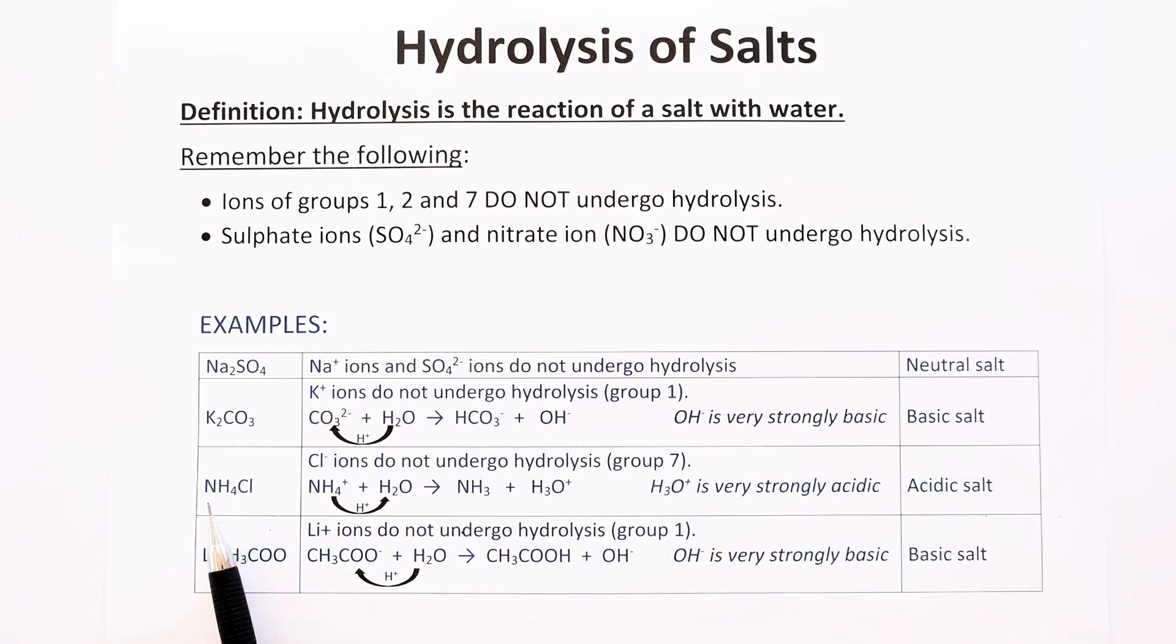The third example, ammonium chloride. Chloride ions are from group 7, so they do not undergo hydrolysis. We're going to react the ammonium ion with the water molecule. The ammonium ion is going to be the acid in this case, and the water is going to be the base and accept the proton.